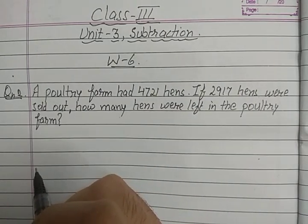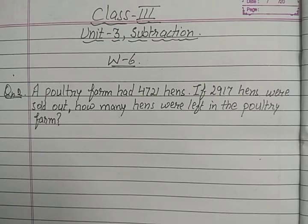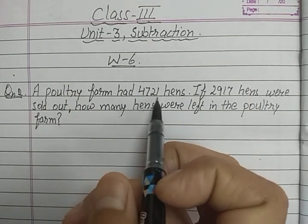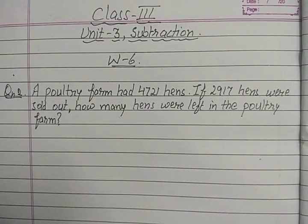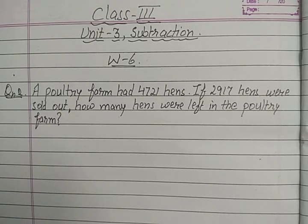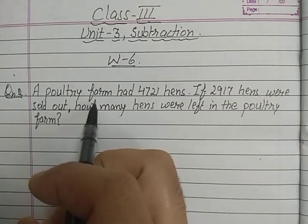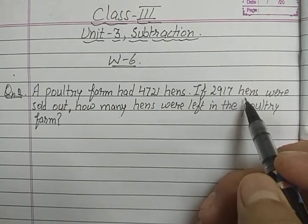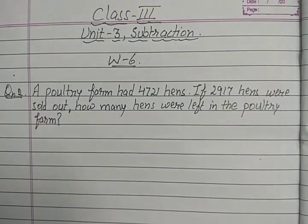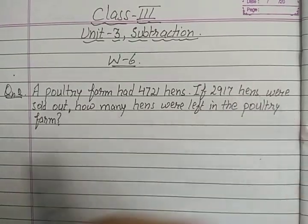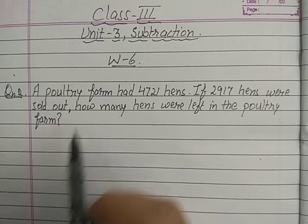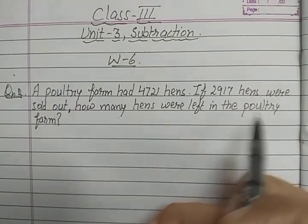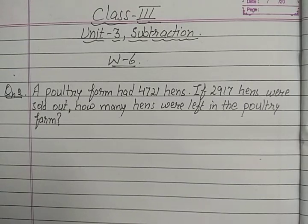The second question of worksheet number six is: a poultry farm had 4721 hens. A poultry farm is a place where we keep and raise hens. If 2917 hens were sold out — that means 2917 hens were sold — how many hens were left in the poultry farm after the sale?